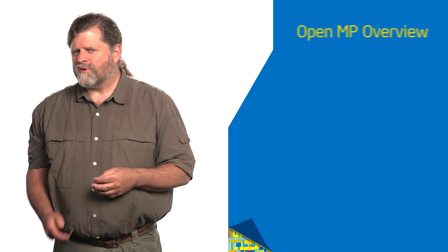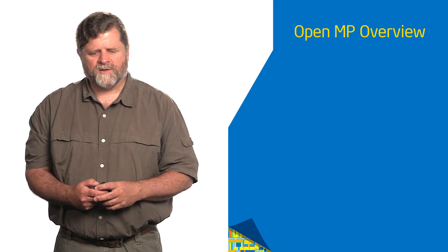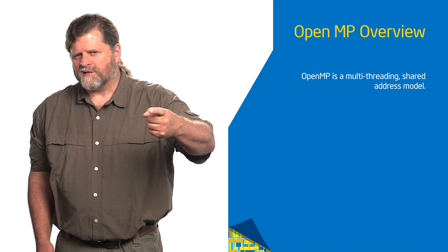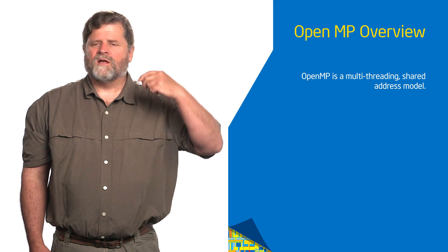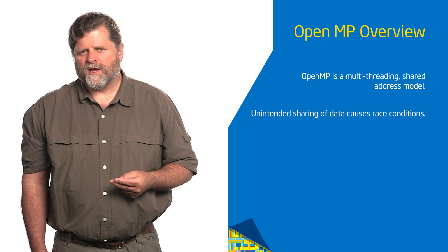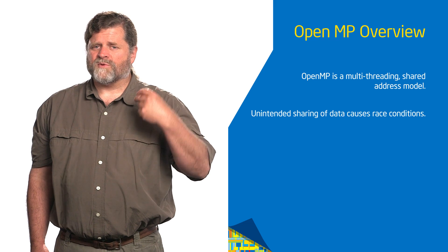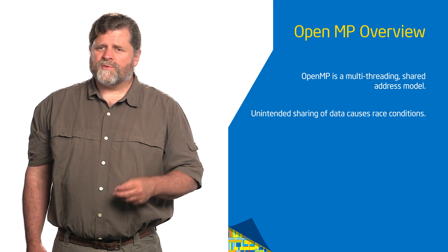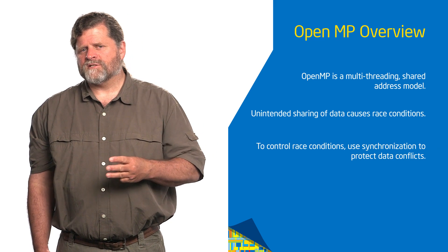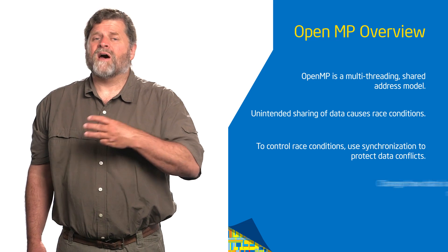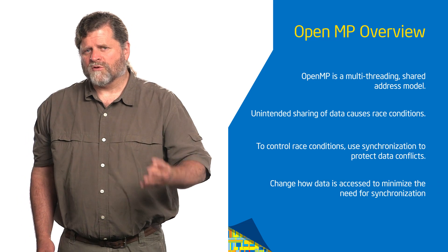We're now ready for our fourth module where we're going to talk about synchronization. Just to put this in context, remember when we first started talking together, I gave you a four bullet point summary of what's going on with OpenMP — how it's multi-threaded in a shared address space model, that you get in trouble when you have unintended sharing of data, which causes race conditions, that you deal with race conditions with synchronization constructs, and then later you minimize synchronization by controlling your data environment.